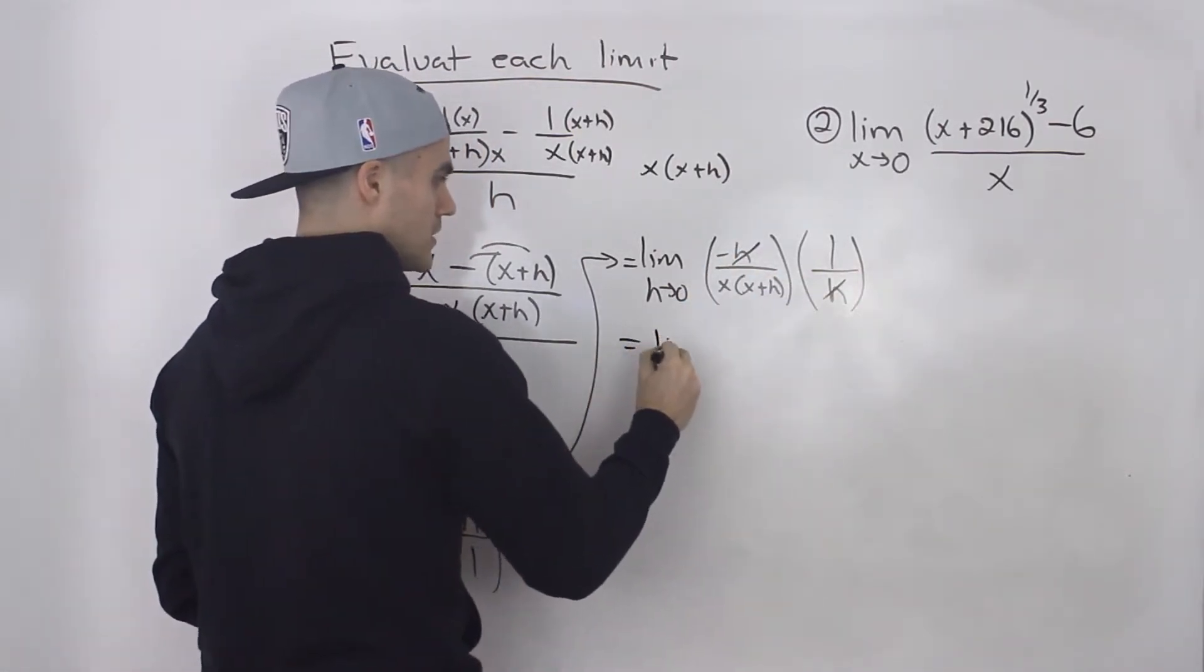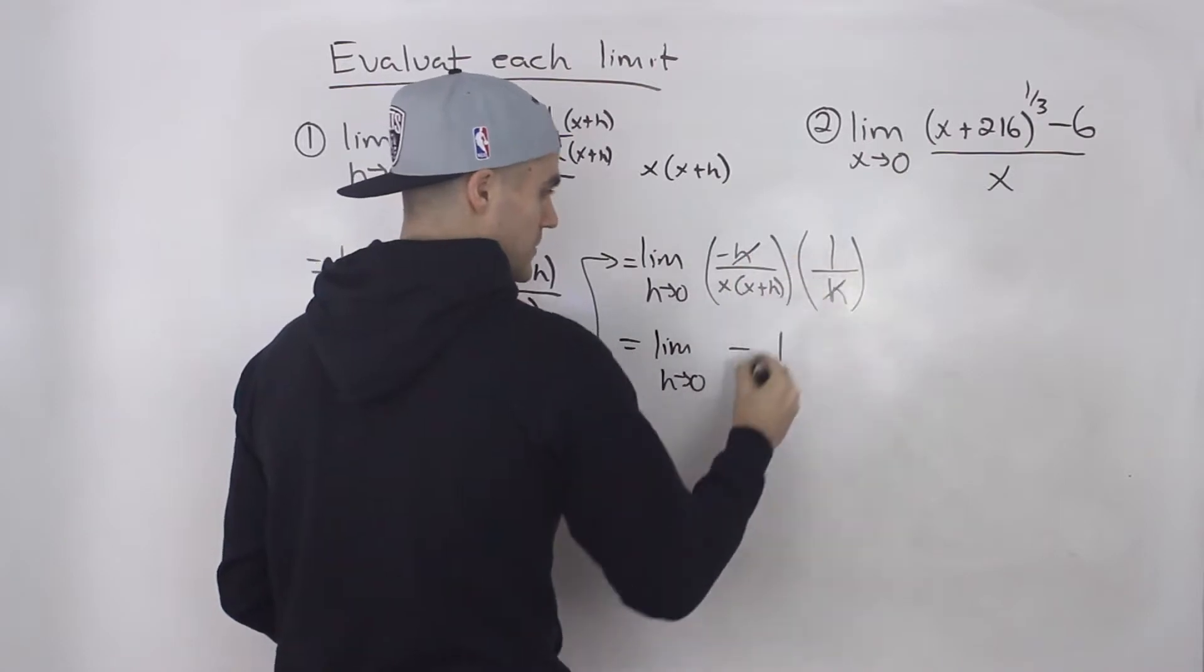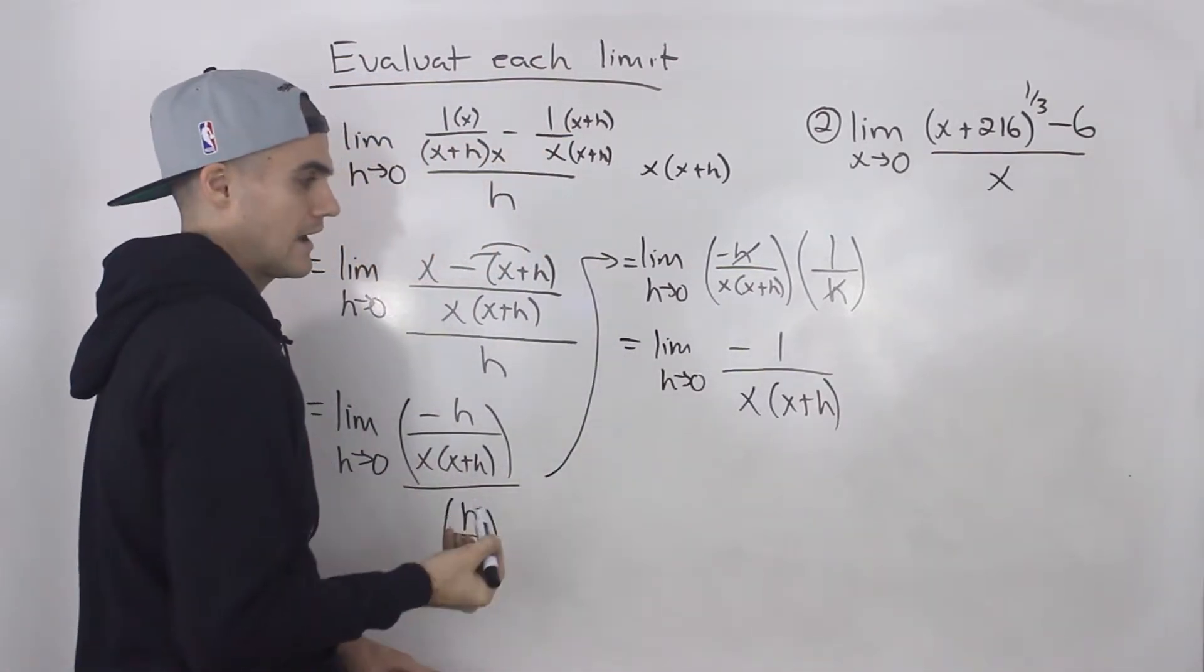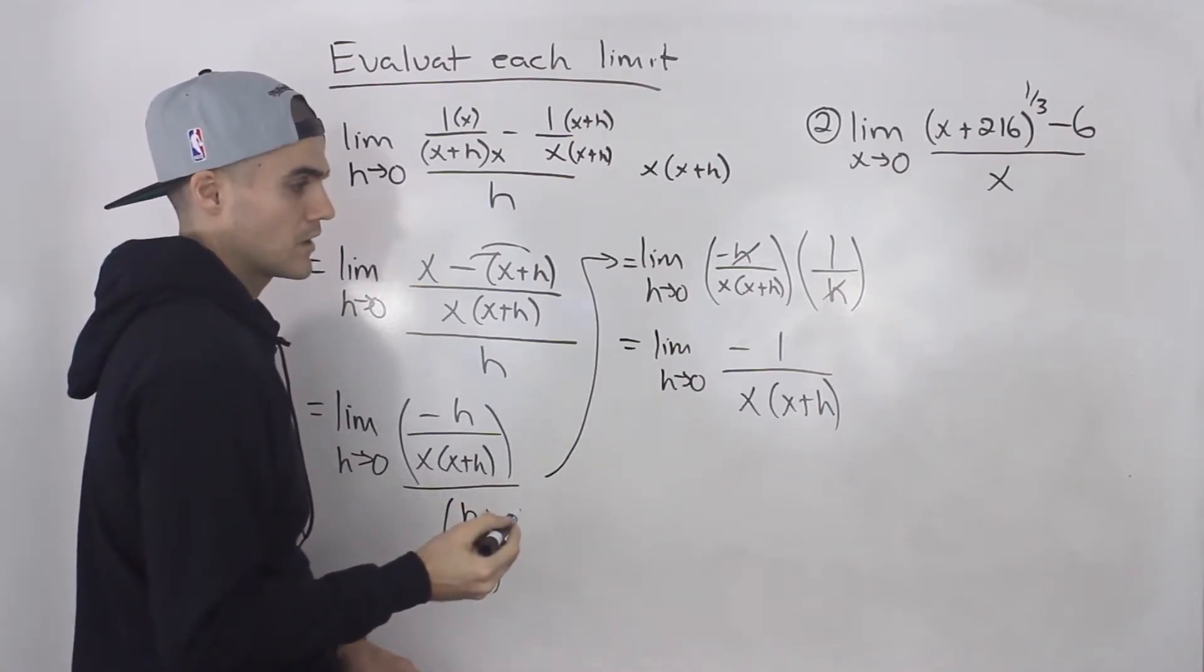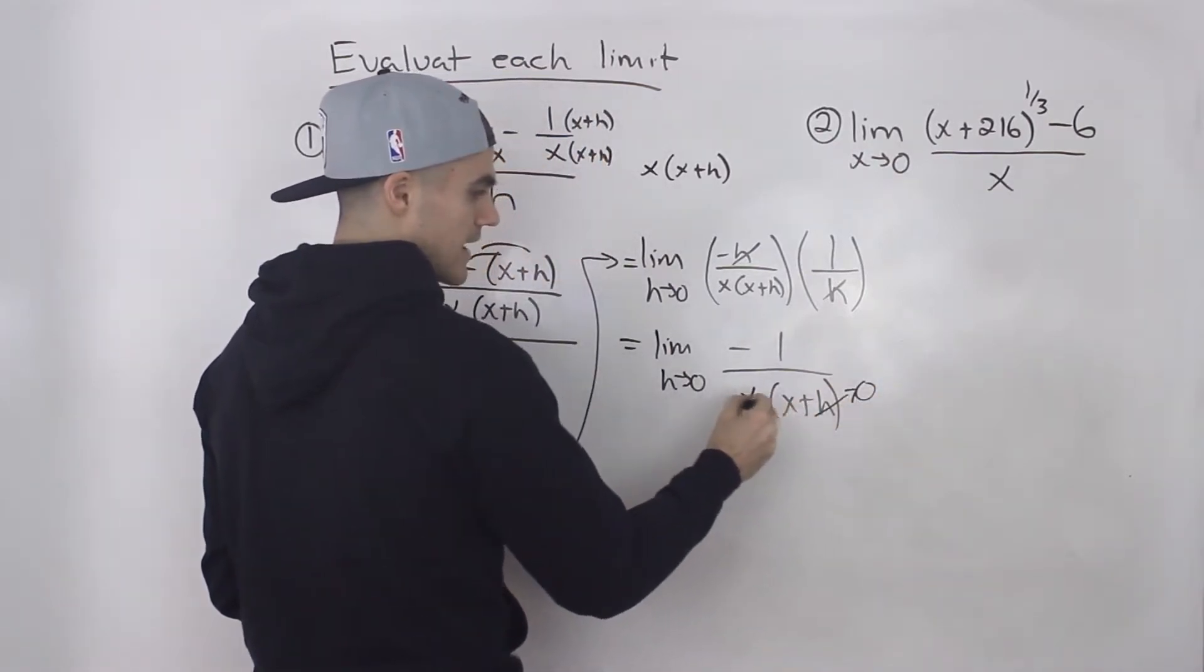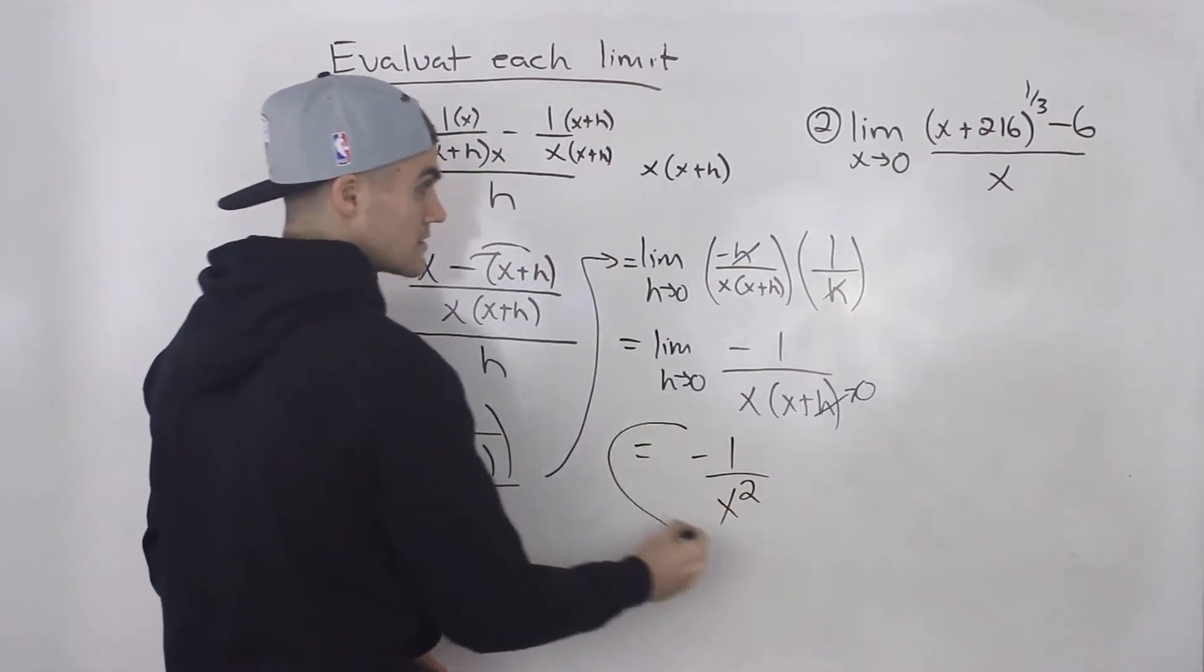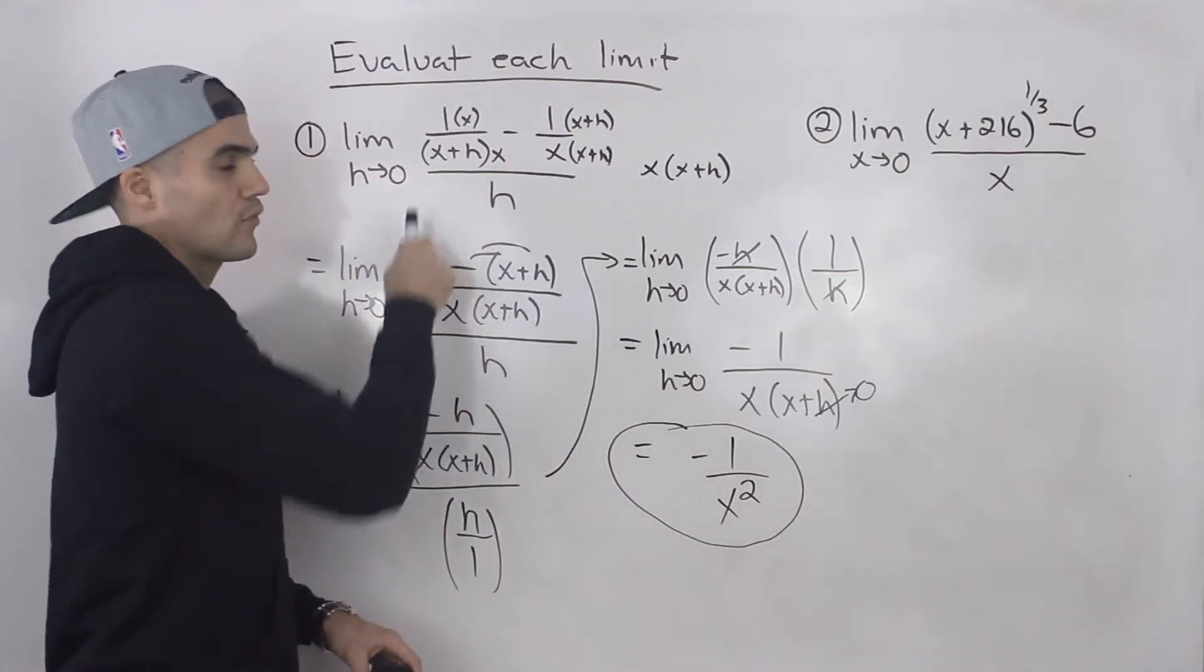And we're left with the limit as h goes to zero, negative one times positive one is just negative one. And we're just left with x, x plus h in the denominator. And now notice how we can plug in a h value of zero, and our denominator won't be zero, won't be undefined. So if we plug in zero for h here, we'll just be left with x, x times x is just x squared. So our final answer is negative one over x squared. That is the limit for the original.